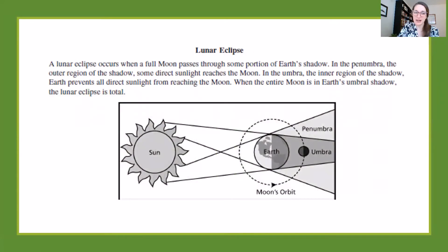So here's the first piece that we have. At the top we see this is about a lunar eclipse. It says a lunar eclipse occurs when a full moon passes through some portion of Earth's shadow. In the penumbra, the outer region of the shadow, some direct sunlight reaches the moon. In the umbra, the inner region of the shadow, Earth prevents all direct sunlight from reaching the moon. When the entire moon is in the Earth's umbral shadow, the lunar eclipse is total.